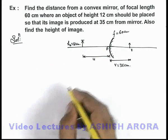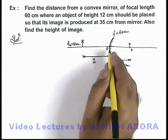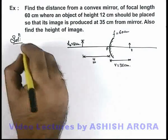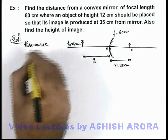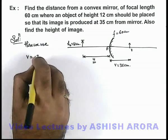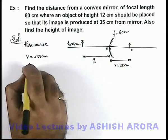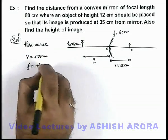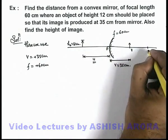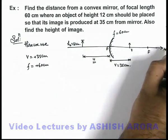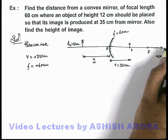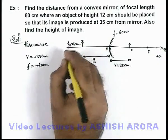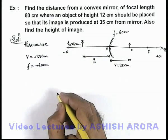In this situation, we first wish to find out the value of u where the object should be placed. Here we use v equals plus 35 centimeters and focal length is plus 60 centimeters, because the focus of this mirror is on the right side of it, which we consider as the plus x-axis, and the opposite side we consider as minus x-axis.